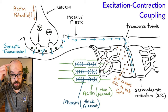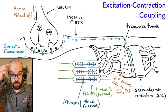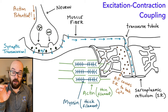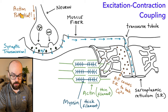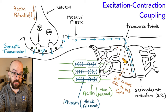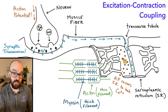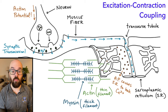Just a quick recap: it all starts with the brain — the motor cortex in the brain sending a signal down through the spinal cord, out through a nerve, and eventually that's going to make it to the end of a neuron that connects to a muscle cell. We start with an action potential that's going to cause synaptic transmission in the neuromuscular junction. That signal is going to travel down along the sarcolemma, down into the transverse tubules, where it's going to interact with the sarcoplasmic reticulum, causing it to release calcium ions. In the presence of calcium ions, the actin and myosin will contract.